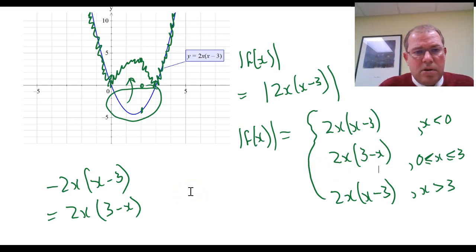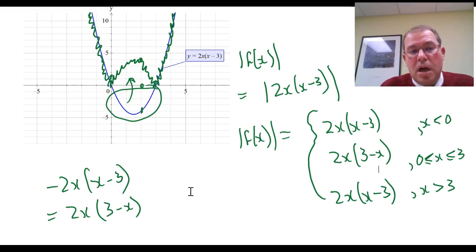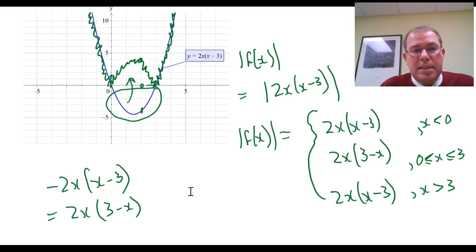Notice that at x equals 0 and x equals 3 we have cusps — corners — where the slope is not defined at those points.